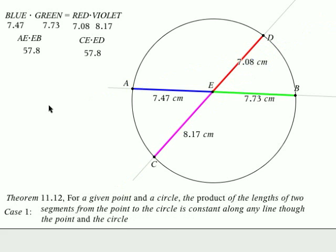Now this theorem has three cases. For a given point and a circle, the product of the lengths of two segments from the point to the circle is constant along any line through the point and the circle. This is kind of a complicated concept so I thought I'd put in some fun colors here to make it a little bit easier to see.